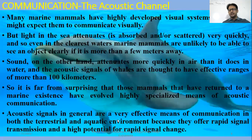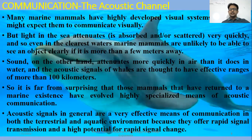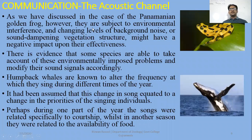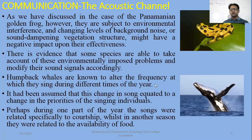Signal transmission is more rapid and has high potential also in the water. As we have discussed in the case of the Panamanian golden frog, they use a waving signal — waving their fore limbs in communication — because sound communication is not very useful for them as amphibians. There is evidence that some species are able to take account of these environmentally imposed problems and modify their sound signals accordingly, because there are issues in the environment such as background noise.